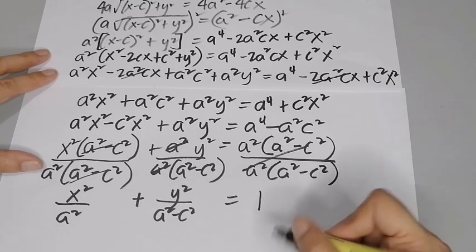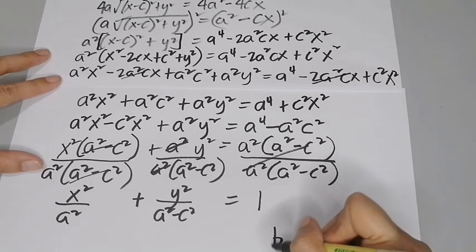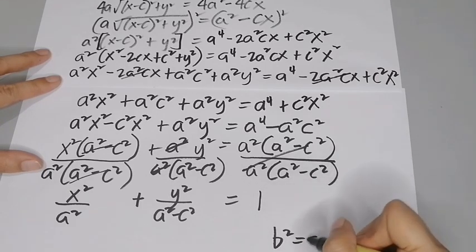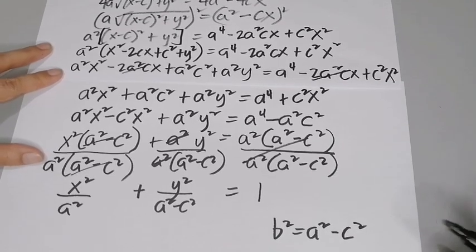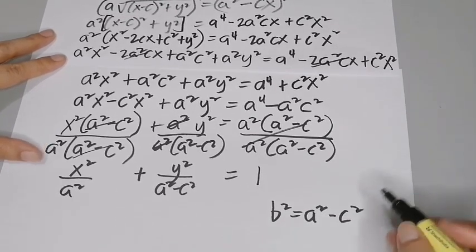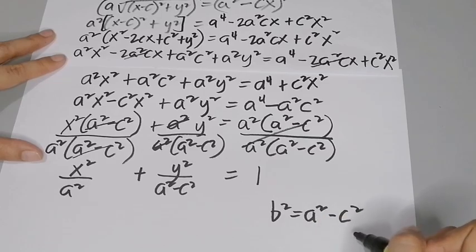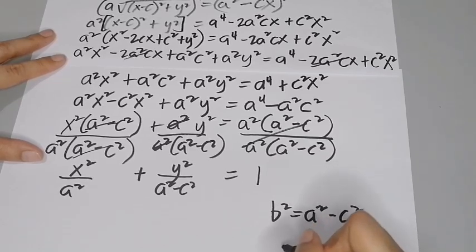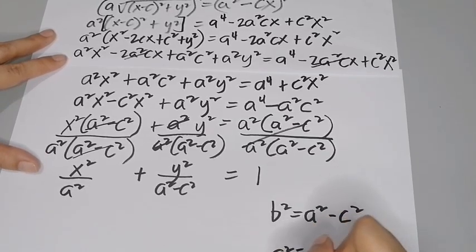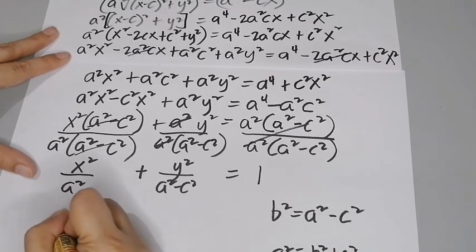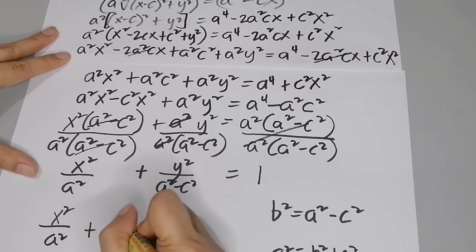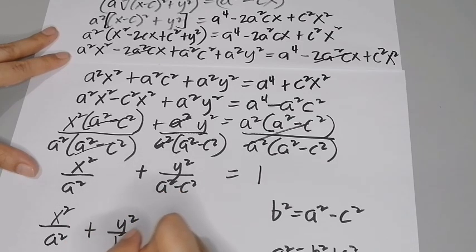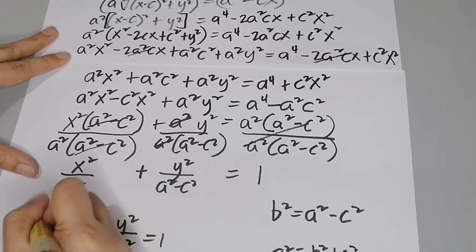We let b² = a² − c², since from the previous video we derived that a² = b² + c². Substituting, we get the standard form: x²/a² + y²/b² = 1.